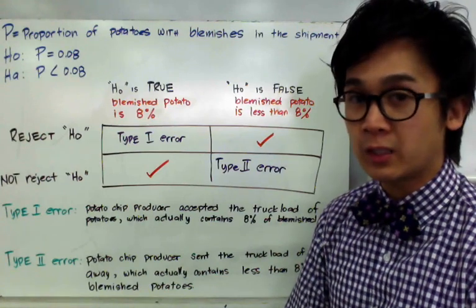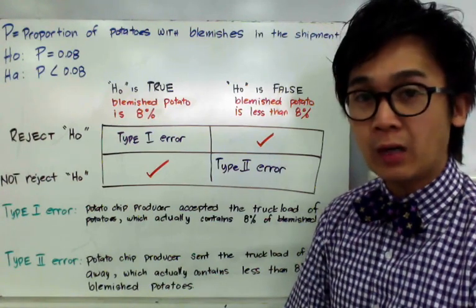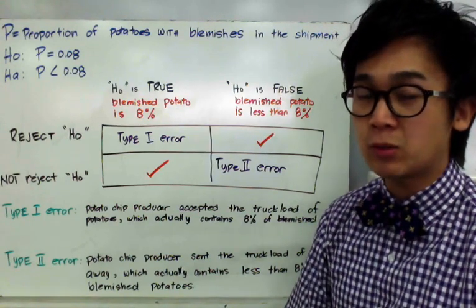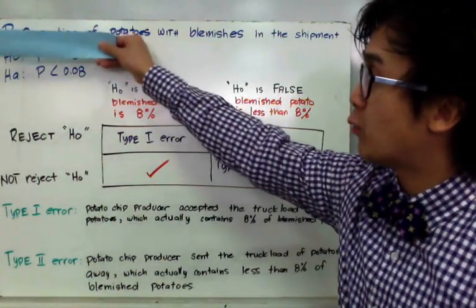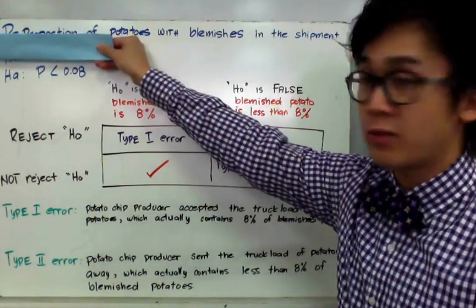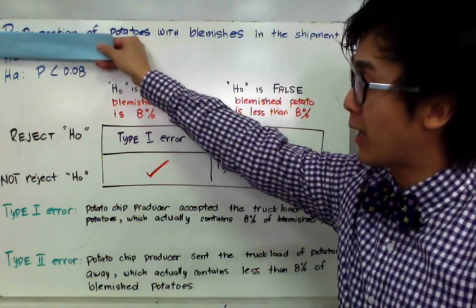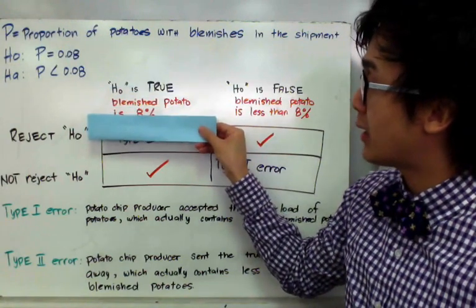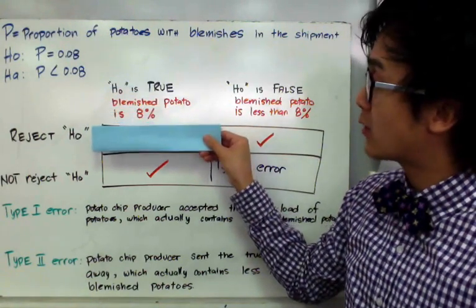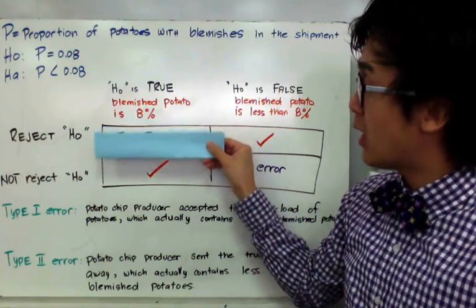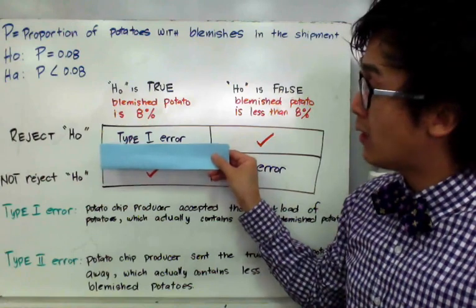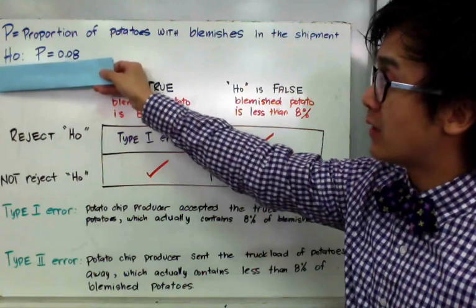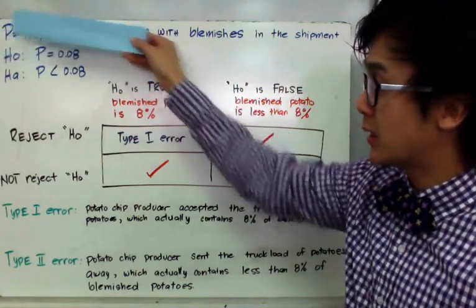How do we commit a type 1 error for this word problem? A type 1 error is rejecting the null hypothesis even though it is true. So if we rejected the null hypothesis — that 8% of the truckload potatoes are blemished — we are committing a type 1 error. A type 2 error is not rejecting the null hypothesis even if the alternative hypothesis is true, meaning we fail to reject when we should have.